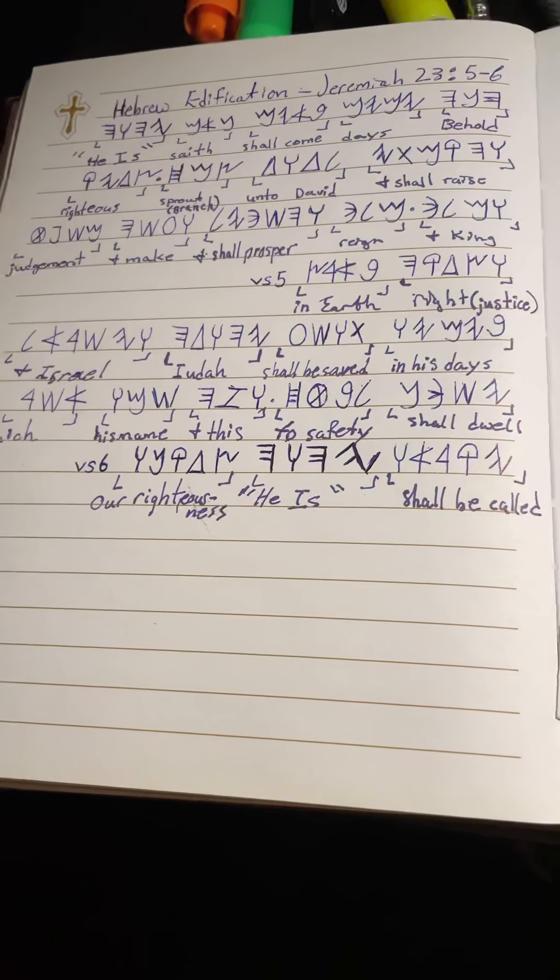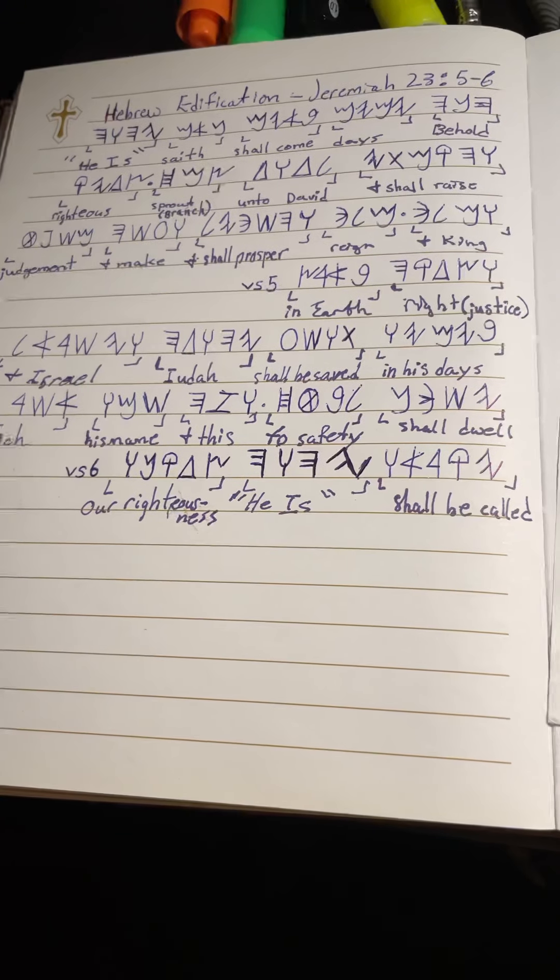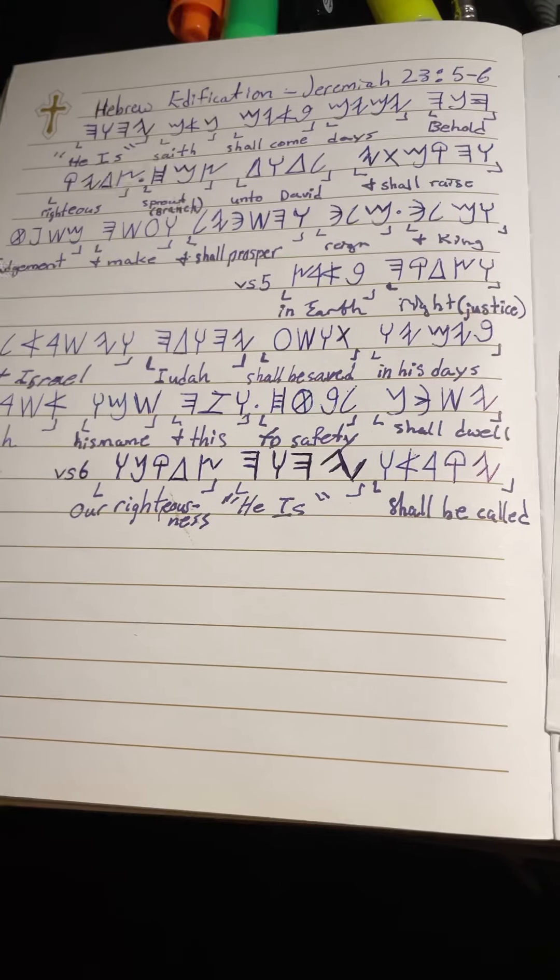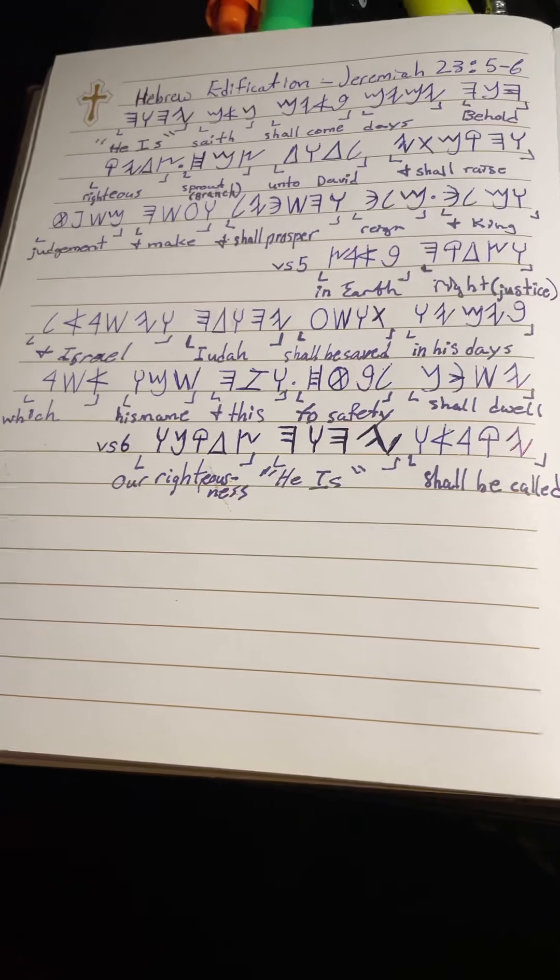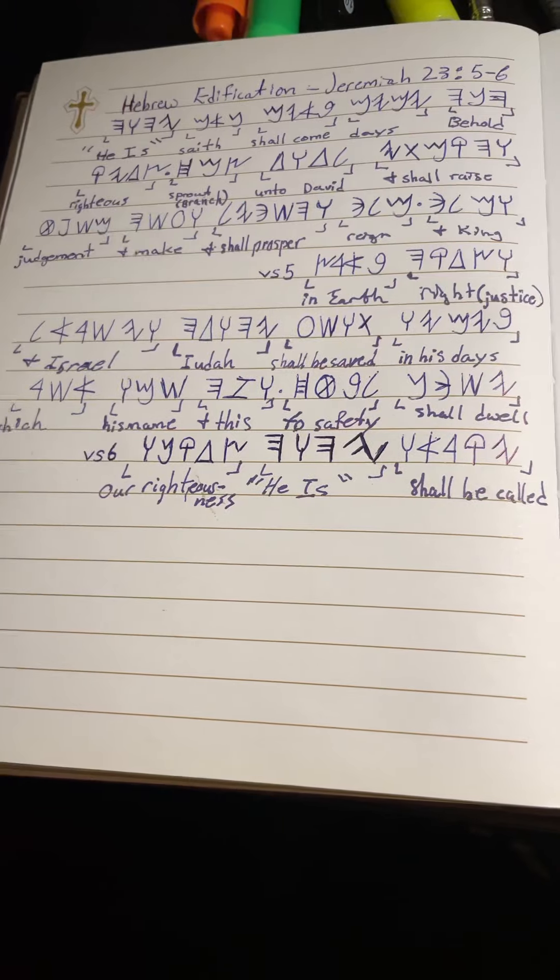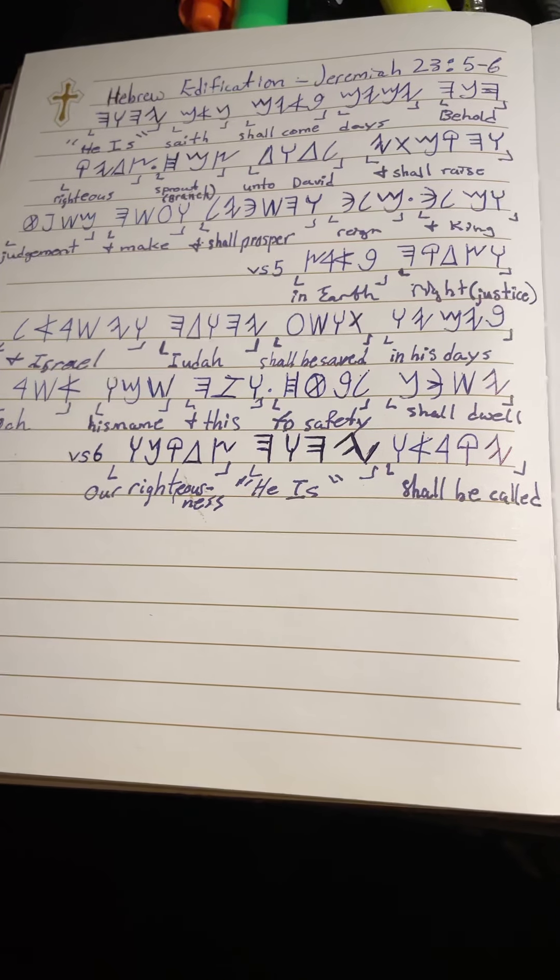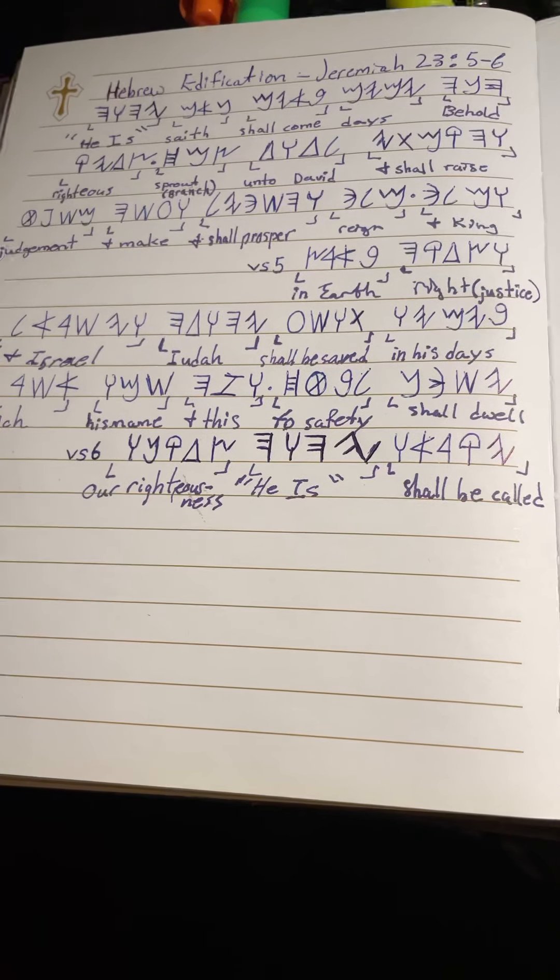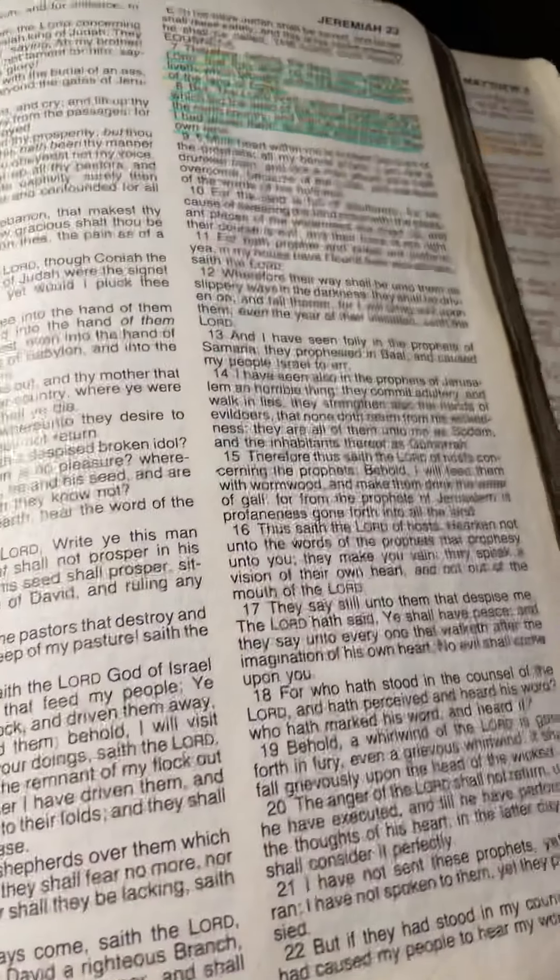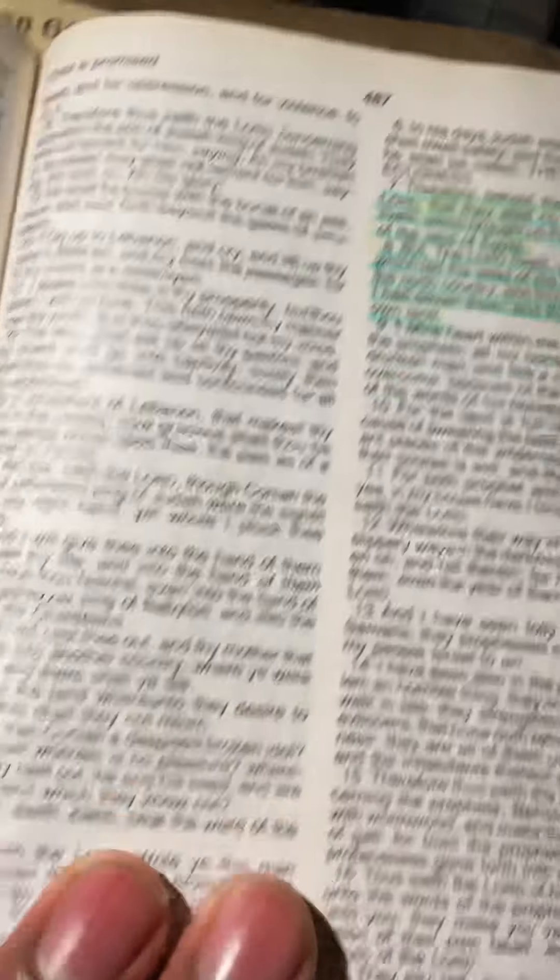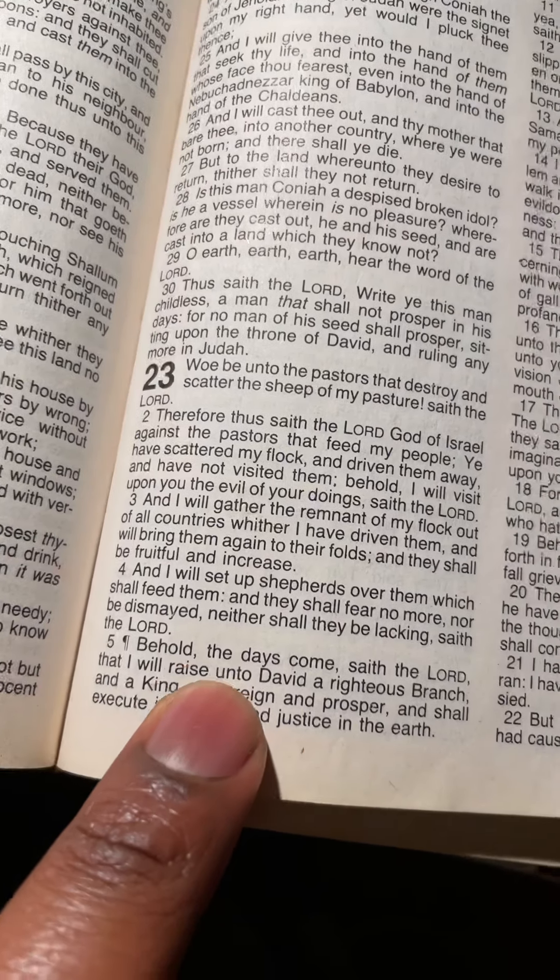This is a part two to the Hebrew edification of Jeremiah the 23rd chapter, the 5th and 6th verse, and this part we will be dealing with the 6th verse of Jeremiah the 23rd chapter. Alright, so I'm going to start off with reading the 5th verse and we'll read all the way down to the 6th verse.